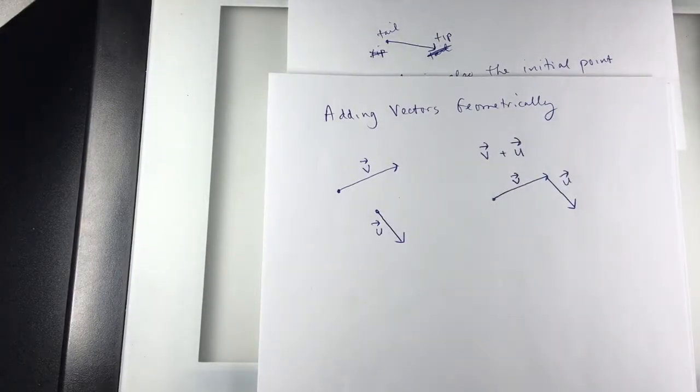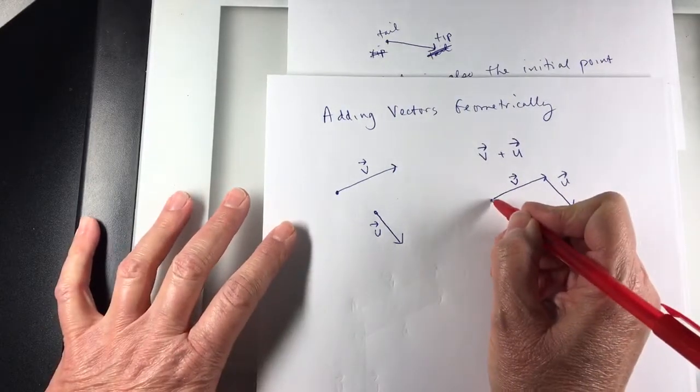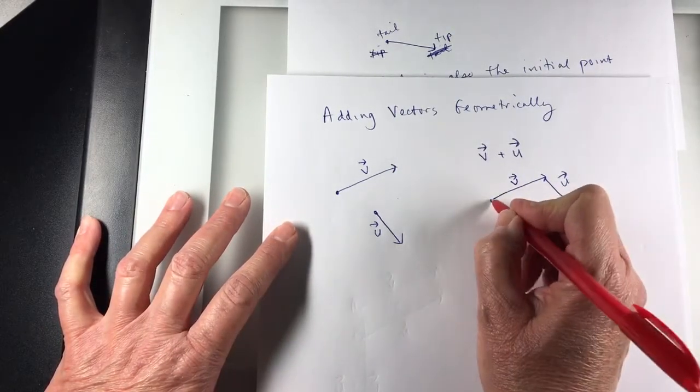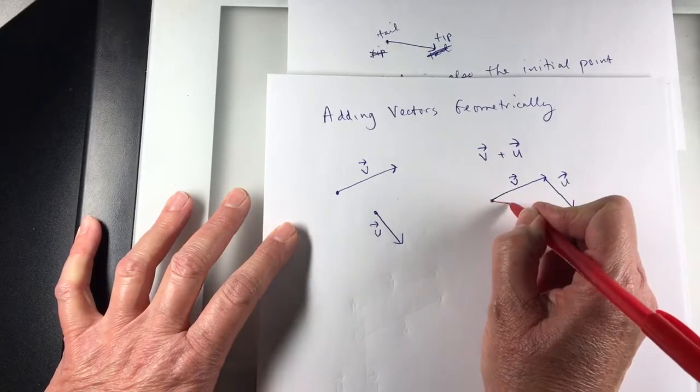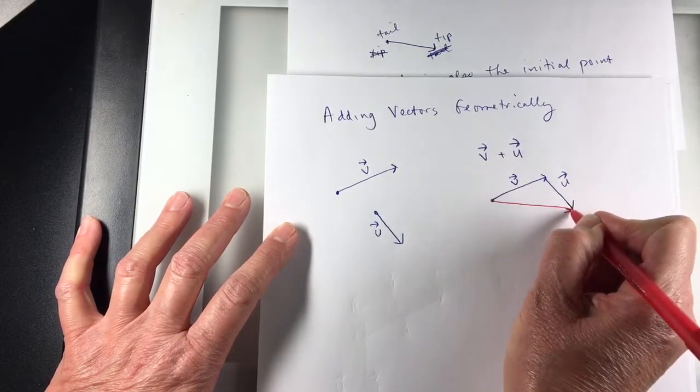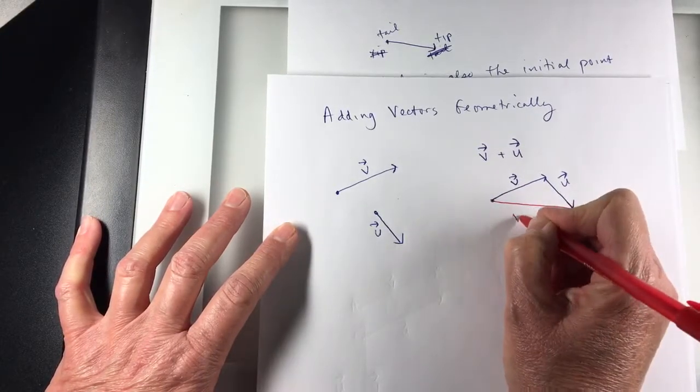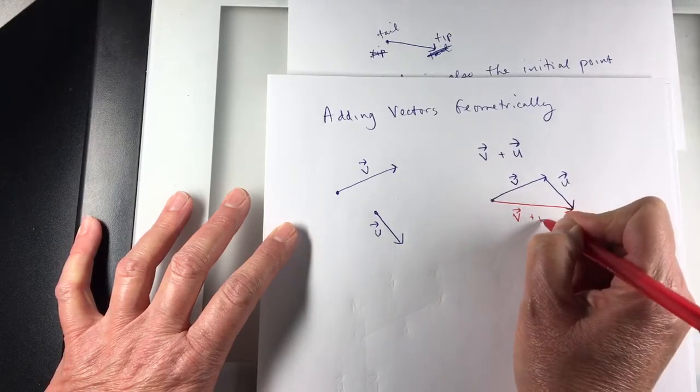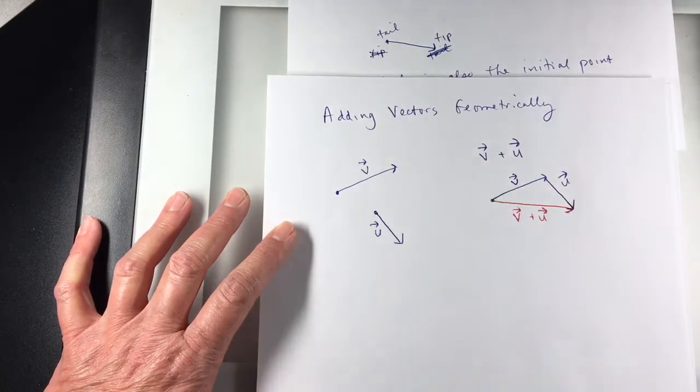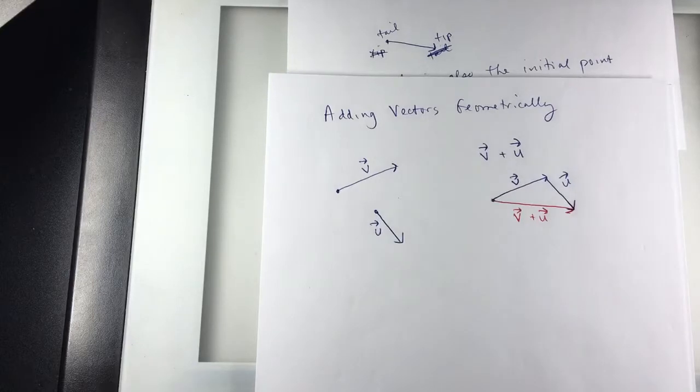And the addition of the two vectors would be the vector that goes from the initial point of V to the terminal point of U. So what I put in red would be V plus U. That's called the triangle rule.